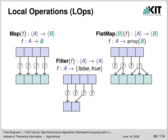Now come a lot of slides with pictures of what the various DIA operations do. Map, Filter and FlatMap are all local operations. Map maps each item of type A to an item of type B, producing a DIA of the same size. Filter identifies items to keep or remove using a boolean test function. FlatMap can output 0, 1 or more items of type B per input of type A, allowing one to expand or contract a DIA.